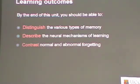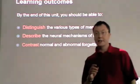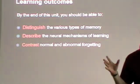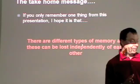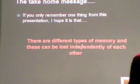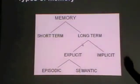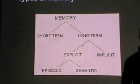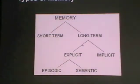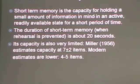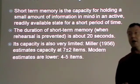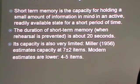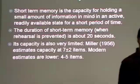The learning outcomes for this unit are the following. If you only remember one thing from this particular presentation, I hope it's this: memory is usually divided into short-term and long-term memory. Long-term memory is divided into explicit and implicit. Explicit memory is divided into episodic and semantic. Short-term memory is the capacity for holding a small amount of information in the mind in an active, readily available state for a short period of time.